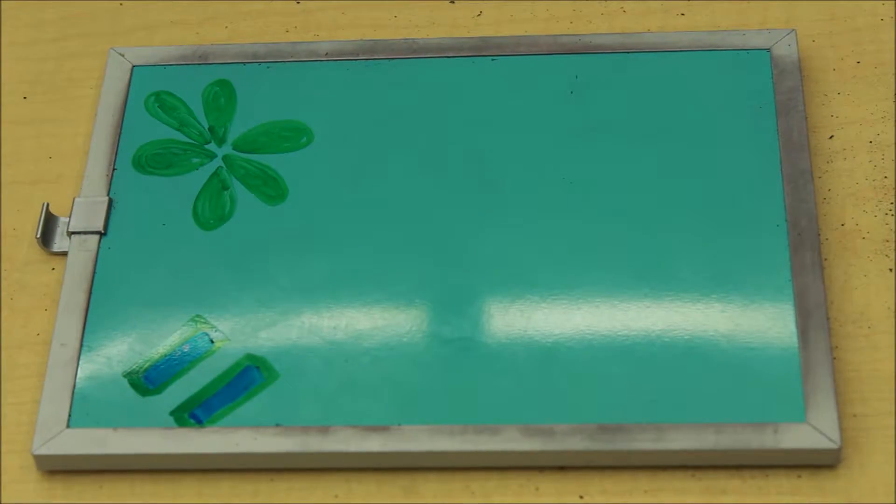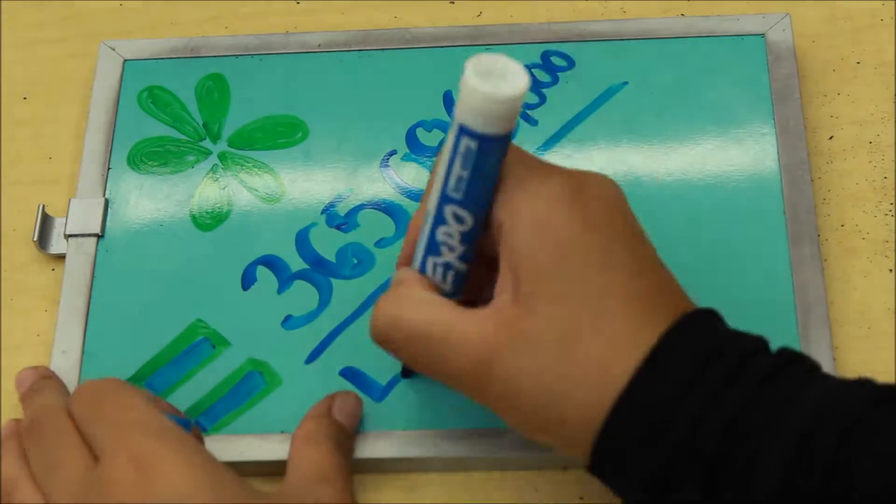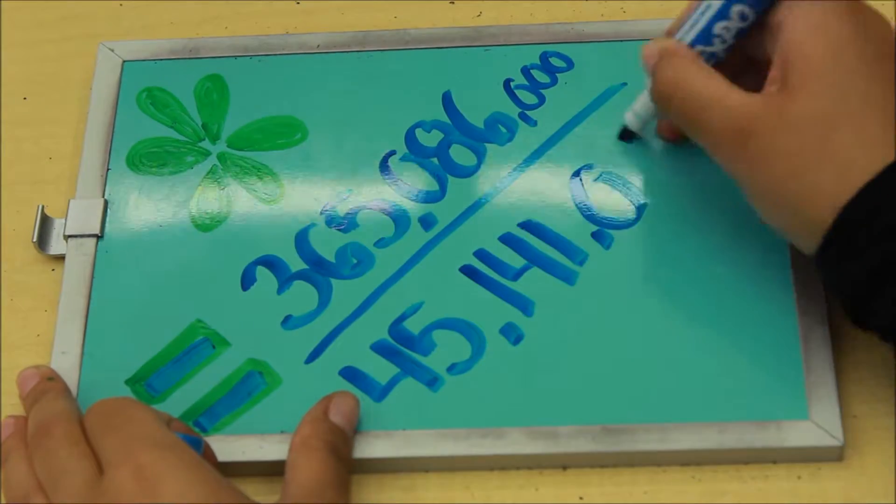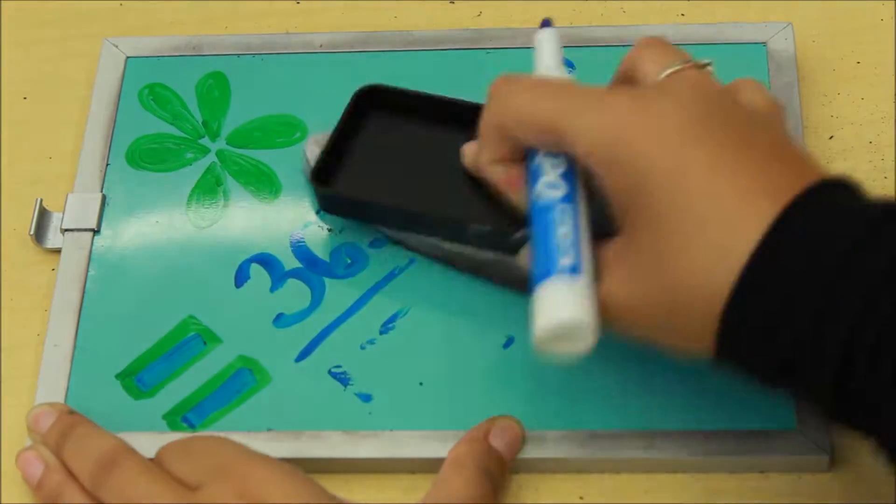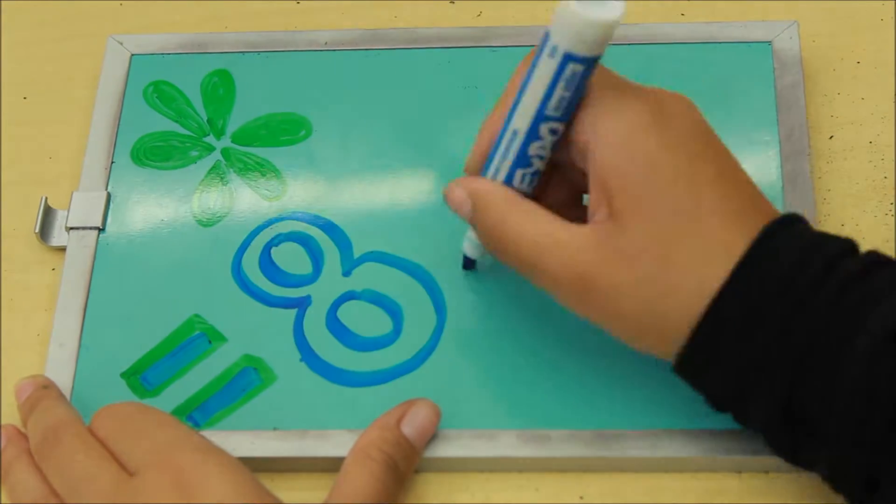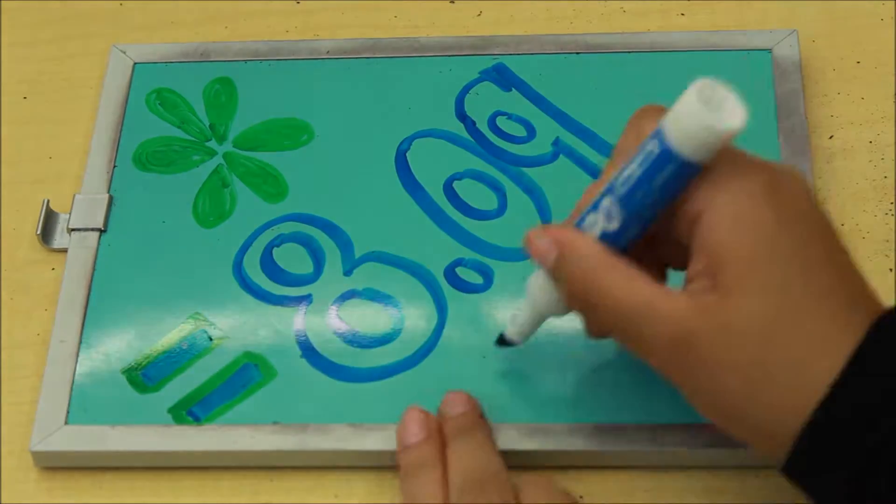Next, we have Walmart, whose inventory turnover ratio comes out to be 8.09. When comparing these numbers, it makes it seem as if Walmart sold their inventory almost two and a half times more than Target did in one year.